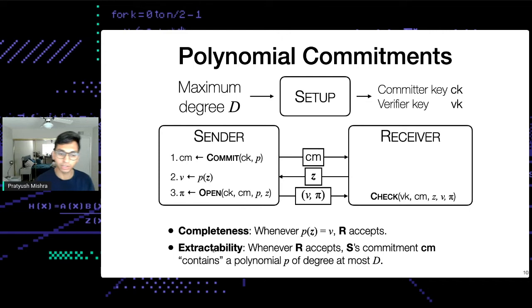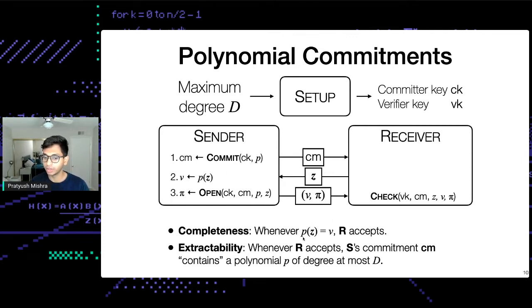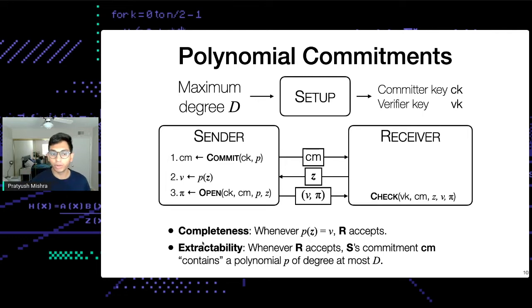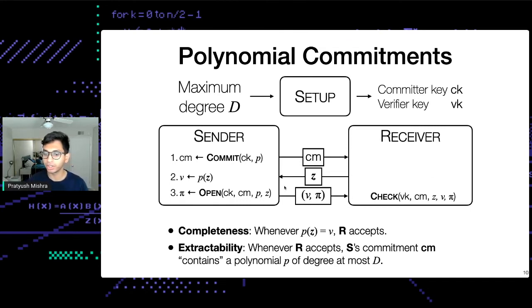This gives an evaluation proof which the sender sends to the receiver, and the receiver checks it against the point and the original commitment. Basically, in a polynomial commitment we commit to a polynomial, and then later we're able to provide a short evaluation proof that the committed polynomial evaluates to some claimed value V at challenge point Z. We want completeness and extractability: whenever the sender is honest and P(Z) = V, the receiver accepts; and whenever the receiver accepts, the sender's commitment actually contains a polynomial of appropriate degree D with P(Z) = V.